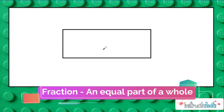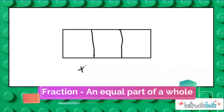So if we're going to take our whole candy bar and we want to split it into three equal parts — we have three equal parts, so we would say that we just split this into thirds. We might remember this from some of our prior lessons. Three equal parts means we can call this thirds.